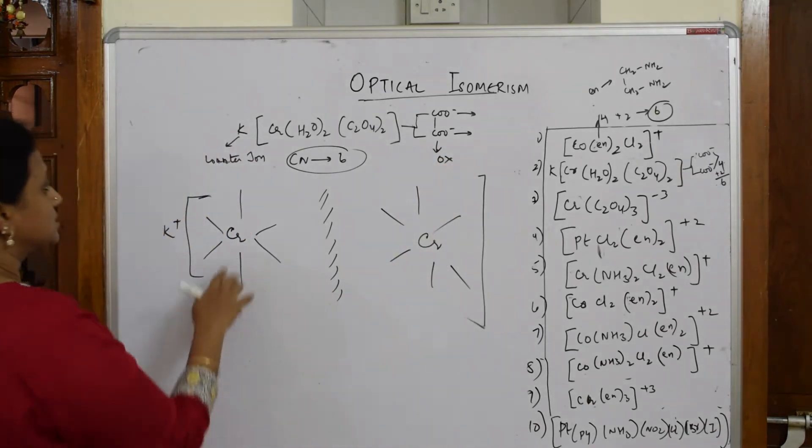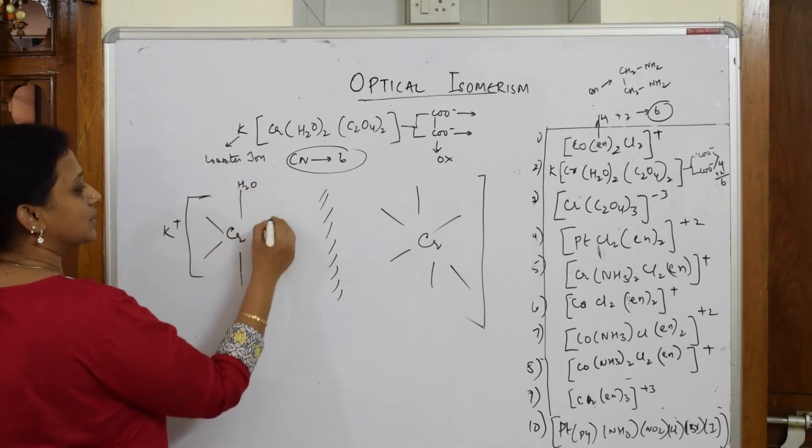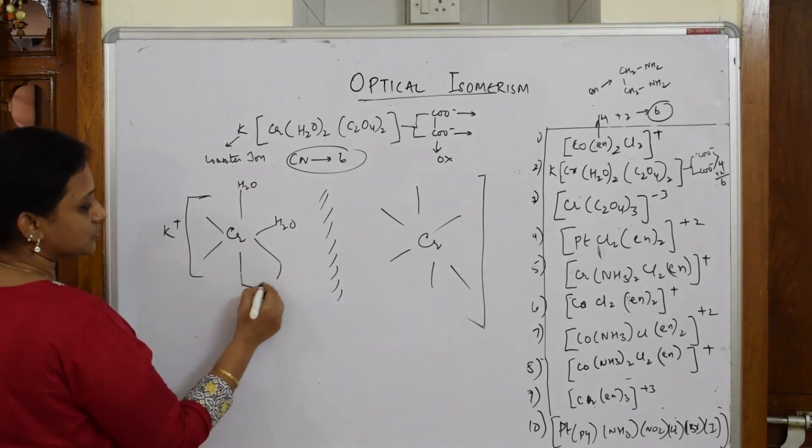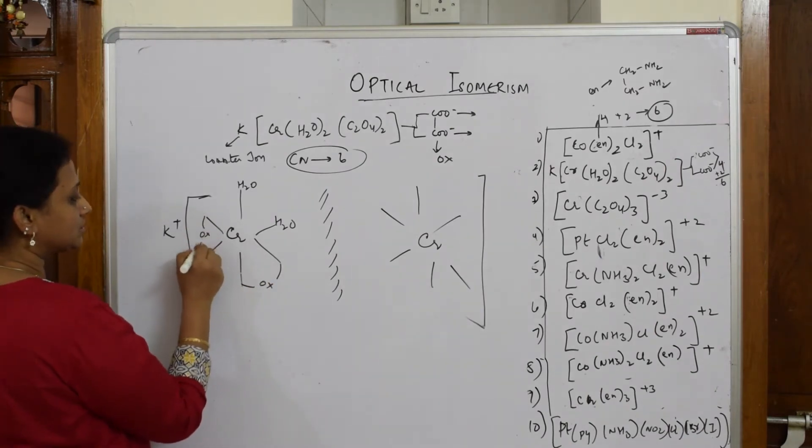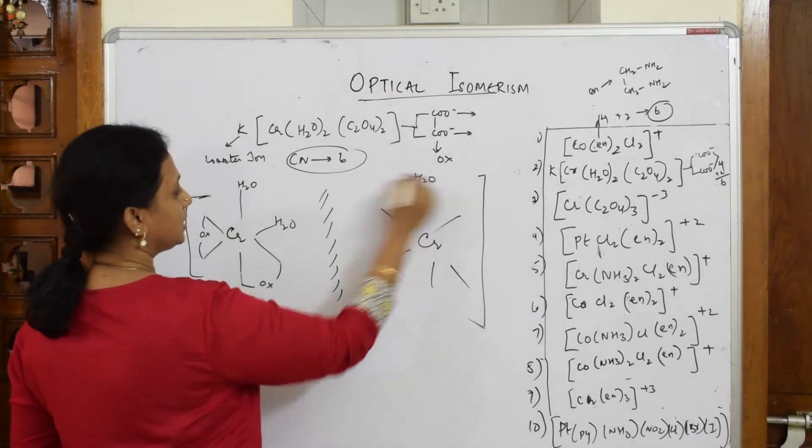For oxalate, instead of C2O4, you can write Ox also, nothing wrong. Start from here: H2O one, H2O two, come down, link this with Ox. The leftover link with Ox. The mirror image of this water is here.